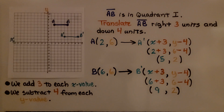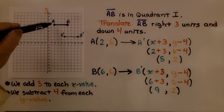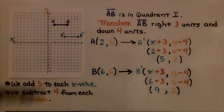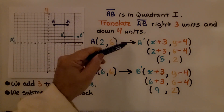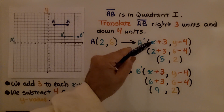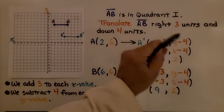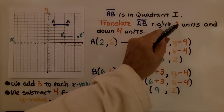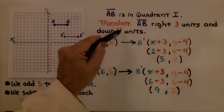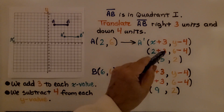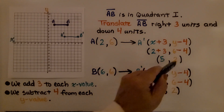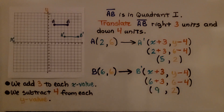We have segment AB in quadrant one. We need to translate segment AB right three units and down four units. Point A is at (2, 6) and B is at (6, 6). A will translate to A prime at x plus three, y minus four — we're going right three units so that's plus three, down four units so that's minus four. Doing the math: two plus three is five, and six minus four is two. A prime is at (5, 2).